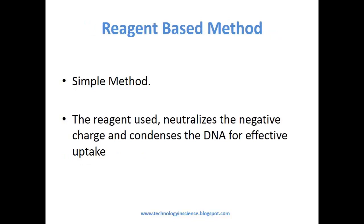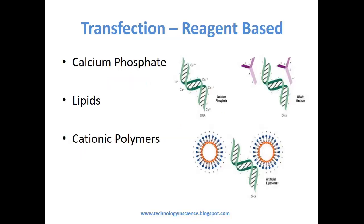Reagent-based methods are simple. The reagent used neutralizes the negative charge and condenses the DNA for effective uptake. As the cell membrane is negatively charged, negatively charged DNA molecules will be repelled from the cells. For the cells to take up DNA, the net charge needs to be positive — that is the reason why reagents are used. The main principle is to give the DNA a net positive charge either by reagents binding to the DNA or by forming complexes with it. Commonly used reagents include calcium phosphate, lipids, and cationic polymers.